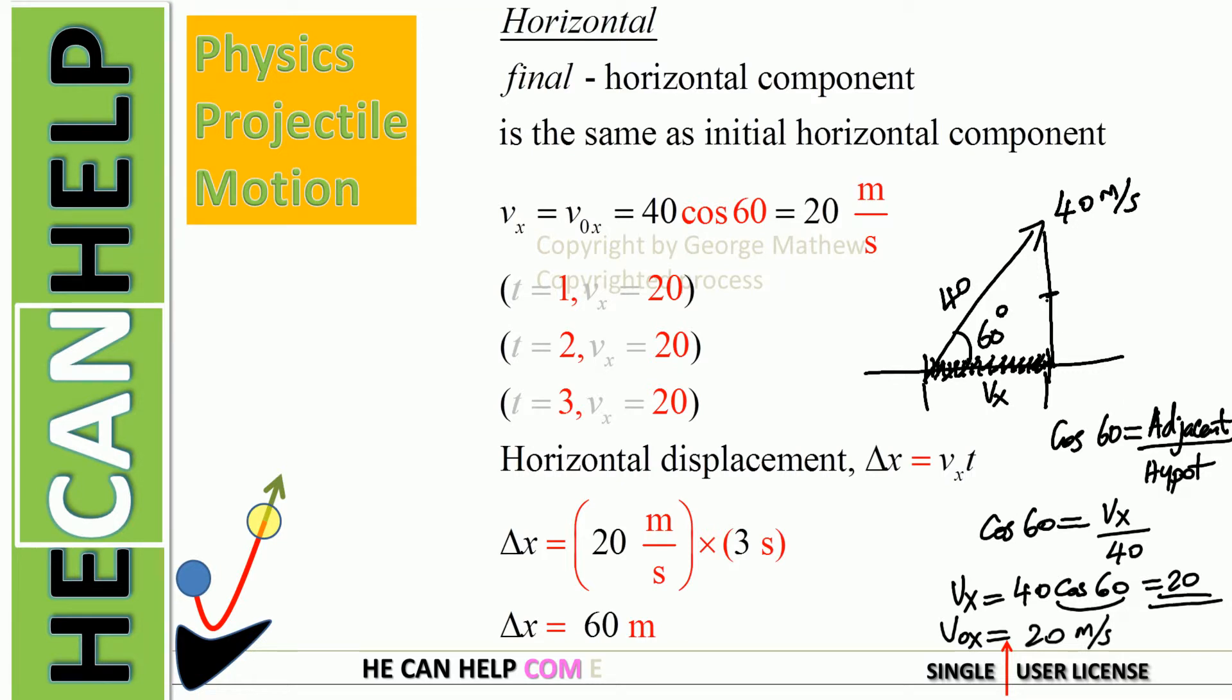It's along positive x. Positive x is defined as to the right, positive y is vertically up, and there is no air resistance. That horizontal component never changes. Why? Because along the horizontal there is no pull or push making the horizontal component change. Along the vertical you have the pull of the earth, but along the horizontal you have nothing. So the horizontal component remains the same - 20 meters per second after one second, after two seconds, after three seconds, and so on.